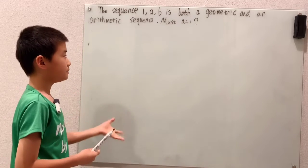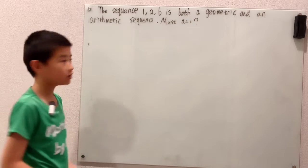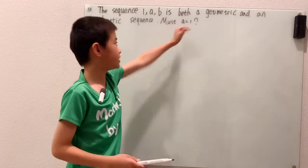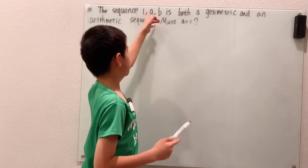The sequence 1, a, B is both a geometric and an arithmetic sequence. Must a equal one? This is what we're trying to prove in this question. We know that the sequence 1, a, B is both a geometric and an arithmetic sequence.